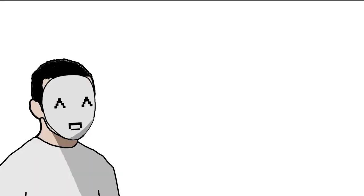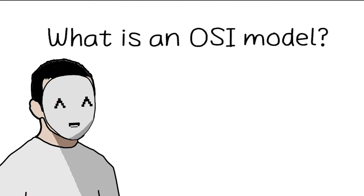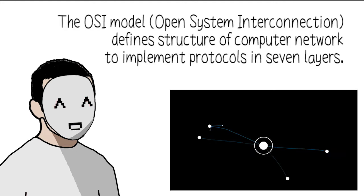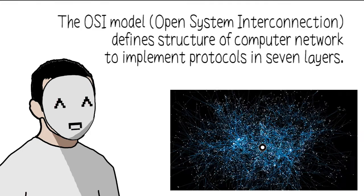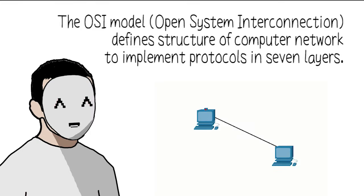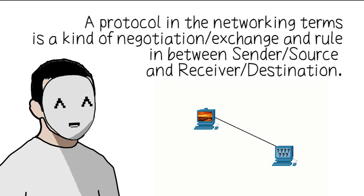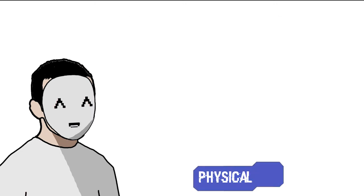Today we are going to learn about the OSI model. The OSI model, Open System Interconnection, defines the structure of a computer network to implement protocols in seven layers. A protocol in networking terms is a kind of negotiation or exchange and rule between sender and receiver.